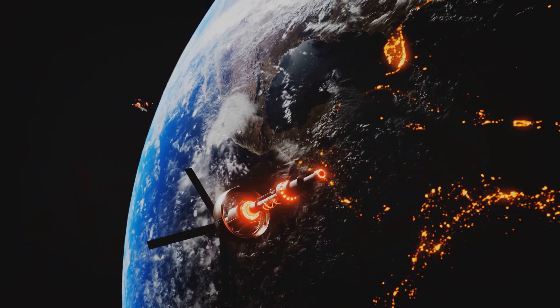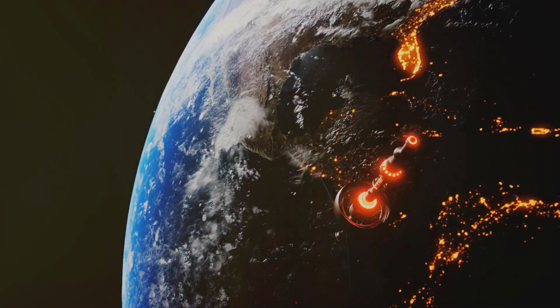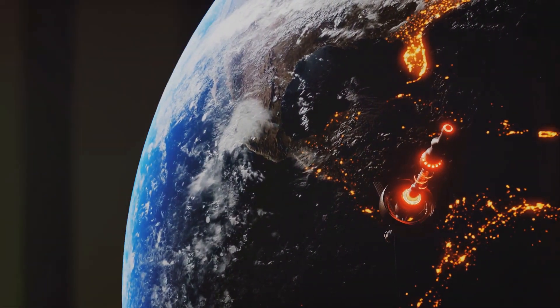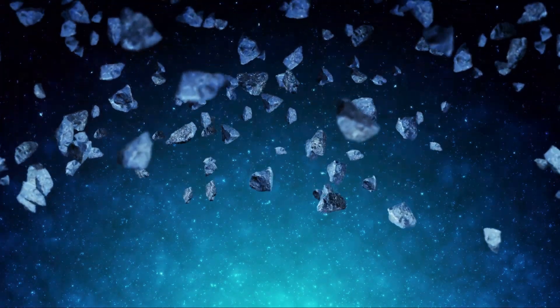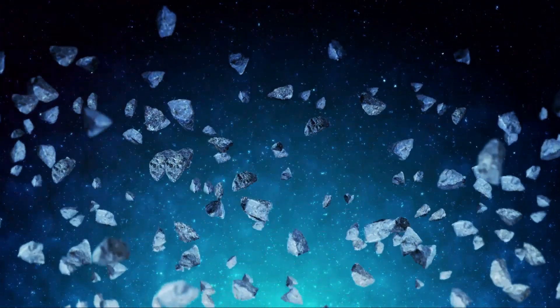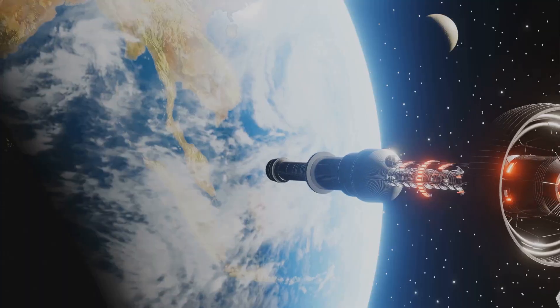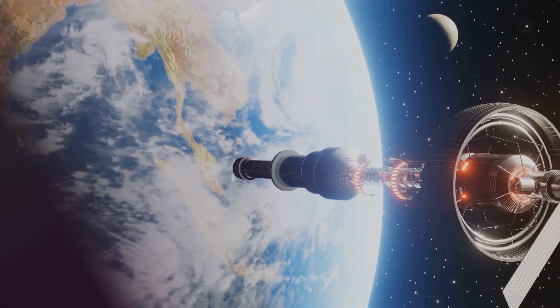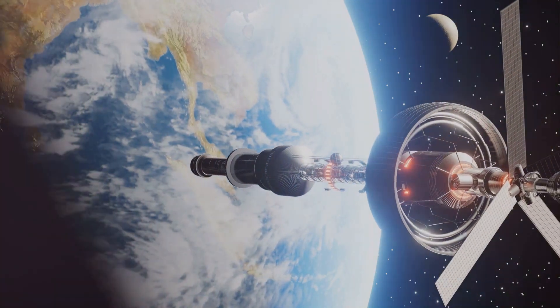Consider this: Every defunct satellite, every bit of debris, was launched by a country or a private entity. They all follow an international agreement, the Outer Space Treaty, which states that the launching nation retains jurisdiction and control over their object, even if it becomes space junk. So to prevent further debris creation, space-faring nations must take responsibility for their space activities. They need to think about the end of life of their satellites and how to remove them from orbit.